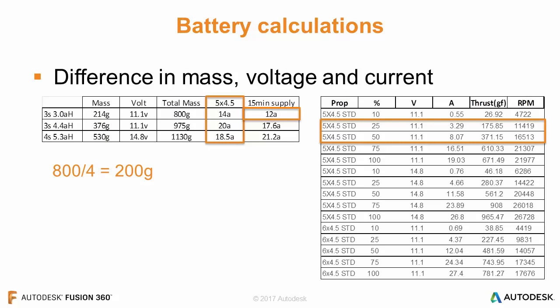Looking at the larger-capacity 3-cell system: instead of 3 amps we have 4.4Ah, but we have to lift 975 grams. Dividing by four means each motor needs 244 grams of lift — still between 25% and 50% input but farther from 25%, so I estimated about 5 amps per motor or 20 amps for all four. The larger battery supplies 17.6 amps for 15 minutes. We need 20 amps but only get 17.6 — we're still not quite there for 15 minutes of flight time.